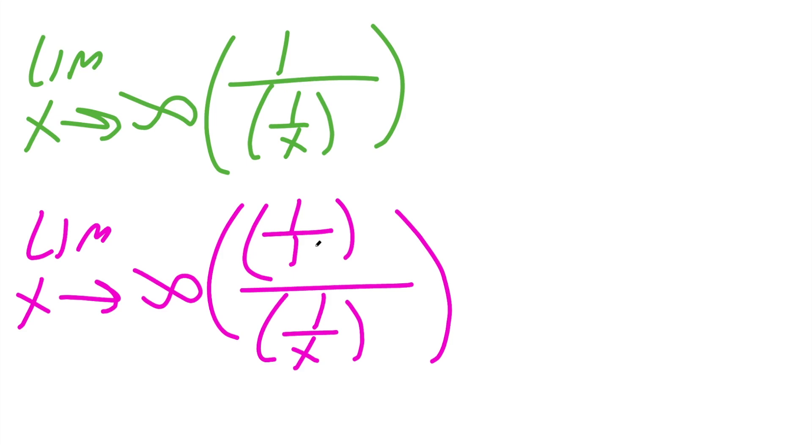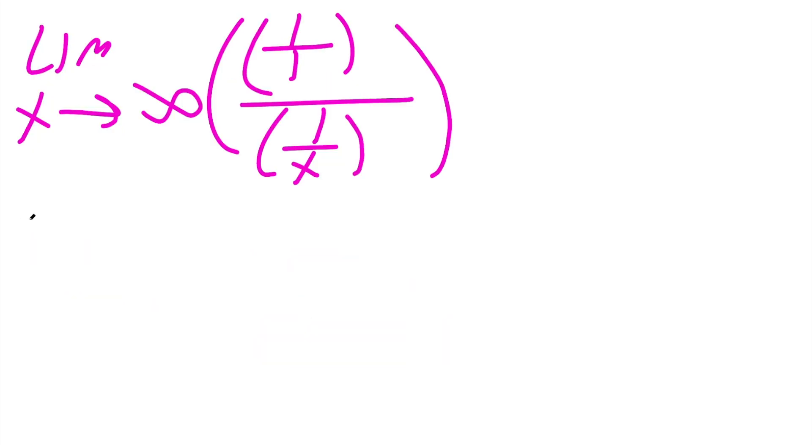And so the reason I'm doing this is I don't want to have division, I want to do multiplication. And I can do that if I flip the one divided by x. So we can rewrite this as limit x approaches infinity, one divided by one, and instead of it being divided by one divided by x, you can change it to multiply x divided by one, those are equivalent.